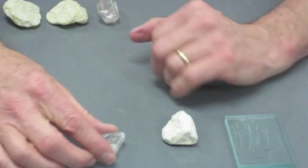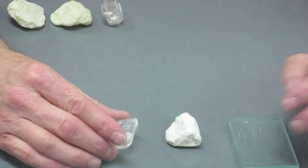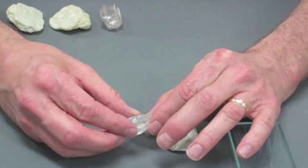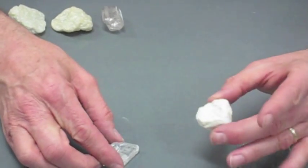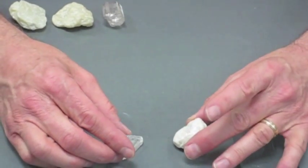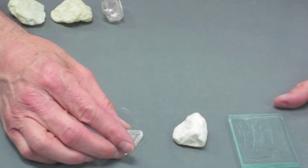It's a pretty soft mineral. This is called selenite, and it's a colorless, clear kind of gypsum. This one's called alabaster. They're both made of calcium sulfate, just slightly different forms.